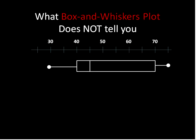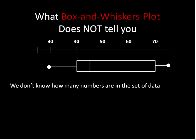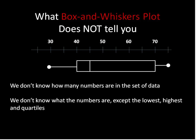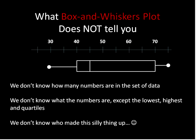What the box and whisker plot does not tell you: we don't know how many numbers are in this set of data. We don't know the value of the individual numbers except for the lowest, highest, and quartile boundaries. It could be 31, 32, 33, and then nothing until 40 — we don't know. This represents a list of numbers, but we don't know which specific ones they are.